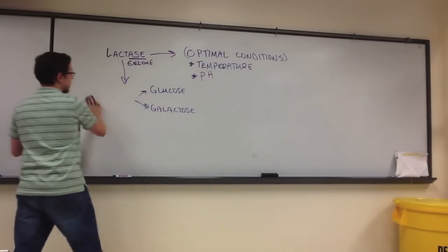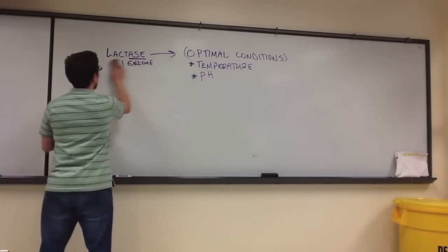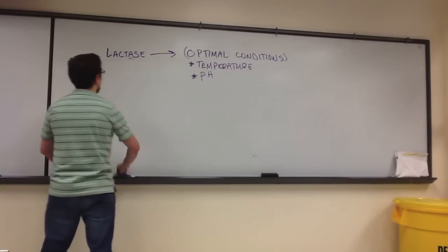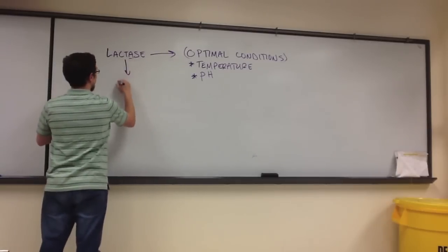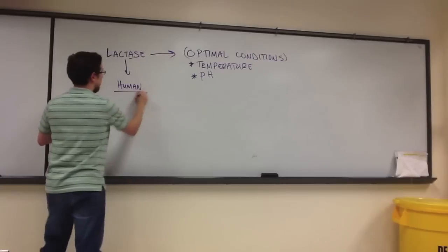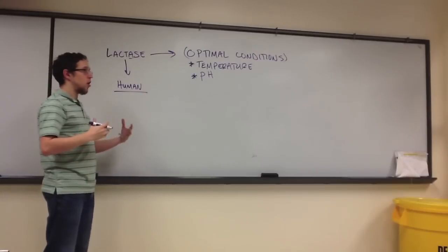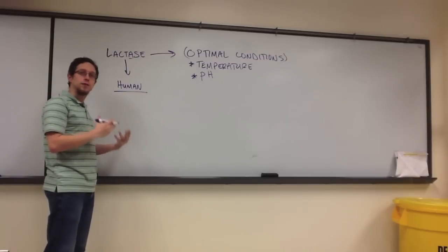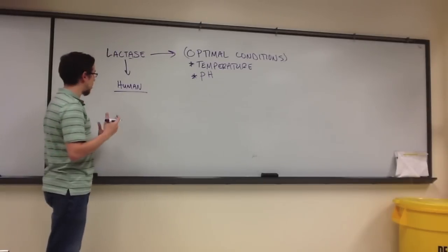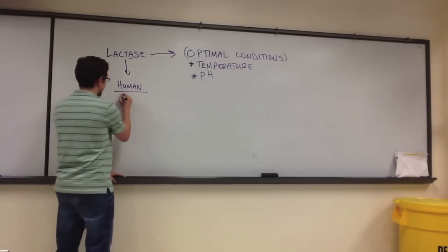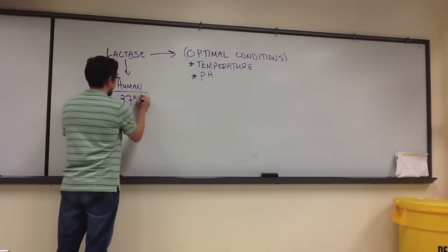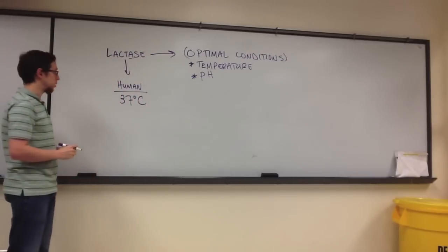For instance, if the lactase in this lab was obtained from a human being, well if you think about it, our body temperature is 98.6 degrees Fahrenheit, which is approximately 37 degrees Celsius. So we would probably expect the optimum temperature to be right around 37 degrees.